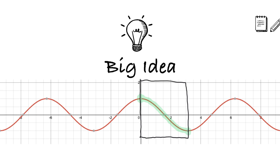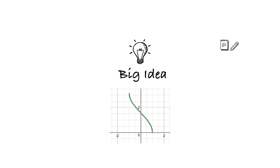To find an inverse, we reflect this curve over the line y equals x. Here's the resulting curve. Plotting a few points: this point is (1, 0), this point where it crosses the y-axis is (0, pi over 2), and the maximum point is (-1, pi). If everything seems turned around where the angles are the y values and the ratios are the x values, that's because they are — we found an inverse.